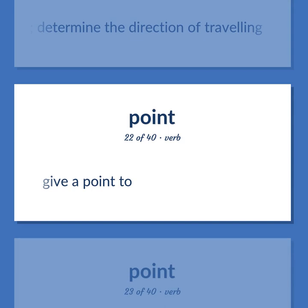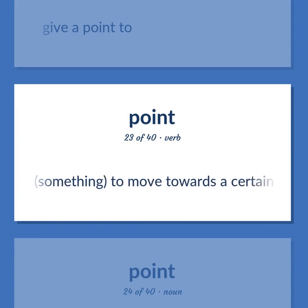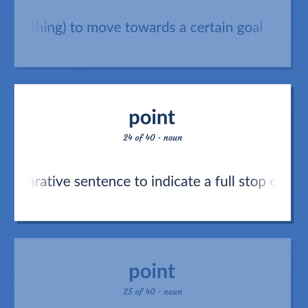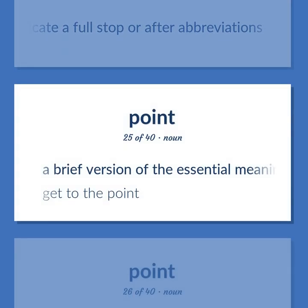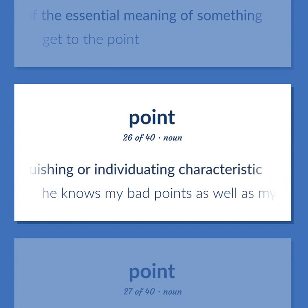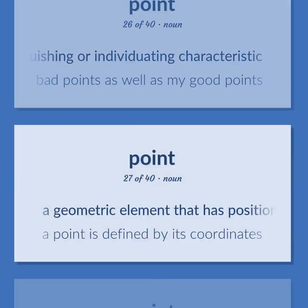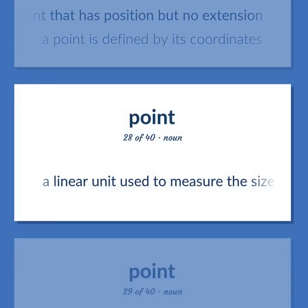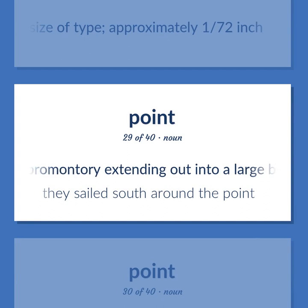Give a point to. Intend something; to move towards a certain goal. A punctuation mark placed at the end of a declarative sentence to indicate a full stop, or after abbreviations. A brief version of the essential meaning of something — get to the point. A distinguishing or individuating characteristic — he knows my bad points as well as my good points. A geometric element that has position but no extension — a point is defined by its coordinates. A linear unit used to measure the size of type, approximately one seventy-second of an inch. A promontory extending out into a large body of water — they sailed south around the point.